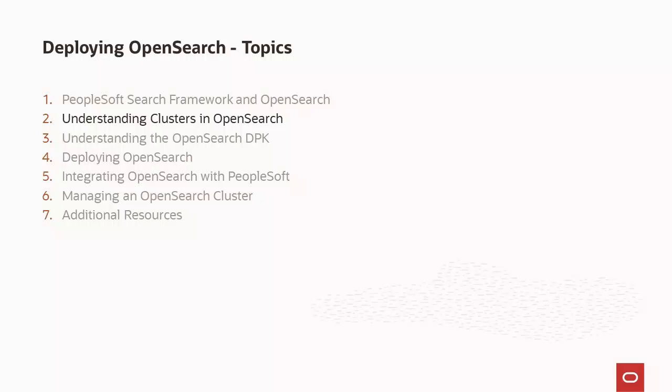In the Understanding Clusters in OpenSearch topic, we'll briefly discuss the important concept of clusters in OpenSearch. PeopleSoft Deployment Packages or DPKs are used to deploy OpenSearch. In the Understanding OpenSearch DPK topic, we'll describe how to obtain the OpenSearch Kit or OSK DPK and describe some of the software components it contains. In the Deploying OpenSearch topic, we'll describe the OpenSearch deployment process, the individual deployment steps, and verifying the cluster setup. The Integrating OpenSearch with PeopleSoft topic takes you through the steps of configuring PeopleSoft Search Framework with OpenSearch using PIA or the ACM template.